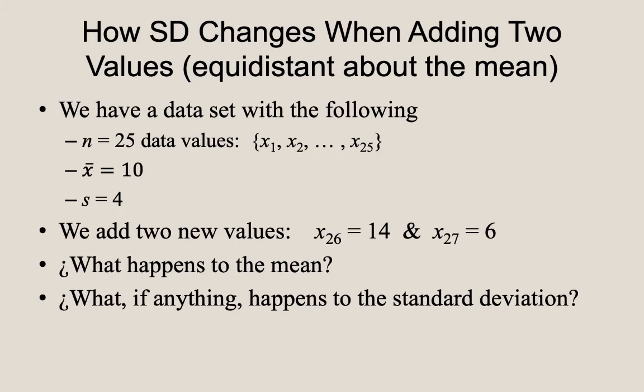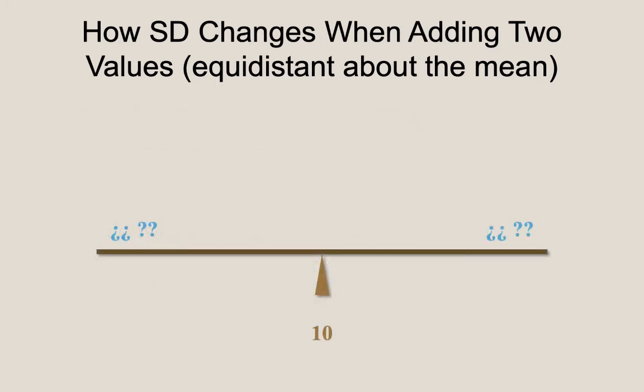Welcome back. Let's see how your responses align with my approach to answering these questions. As before, the mean will stay the same. This is because the two new values are equally spaced in either direction from the mean.